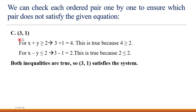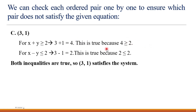Checking option C: x equals 3 and y equals 1. For the first inequality, x plus y: 3 plus 1 equals 4. Since 4 is greater than or equal to 2, this is true. For the second inequality, x minus y: 3 minus 1 equals 2. Since 2 is less than or equal to 2, this is also true. Both inequalities are satisfied.